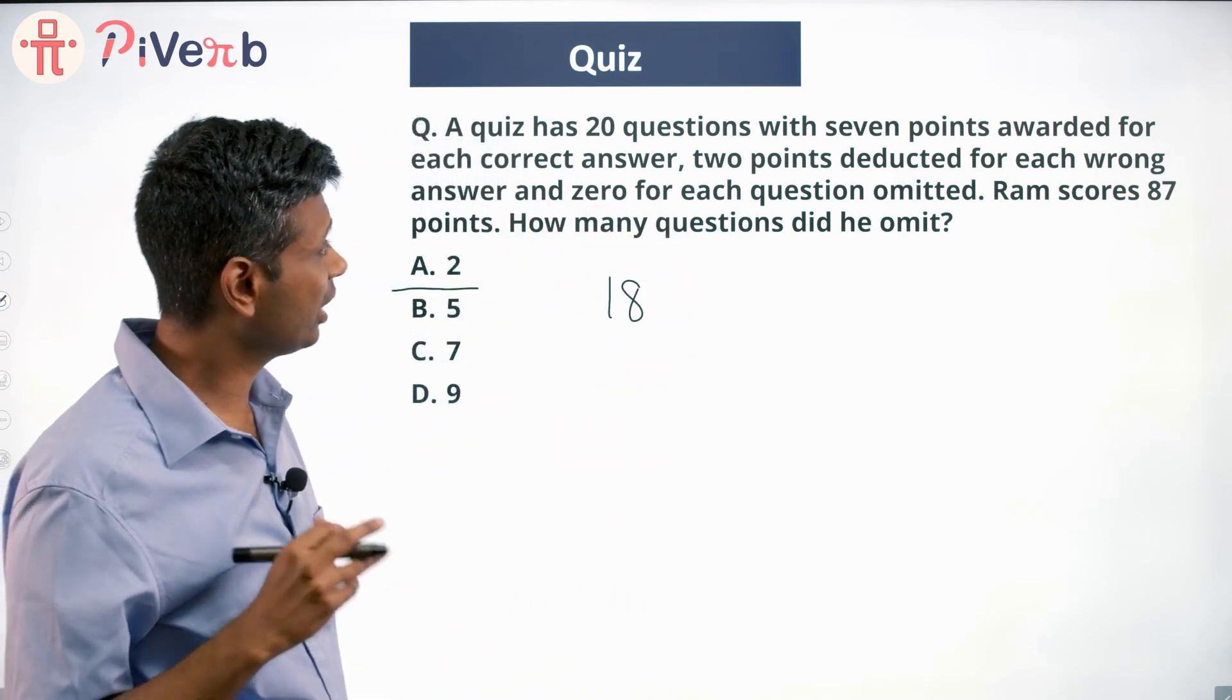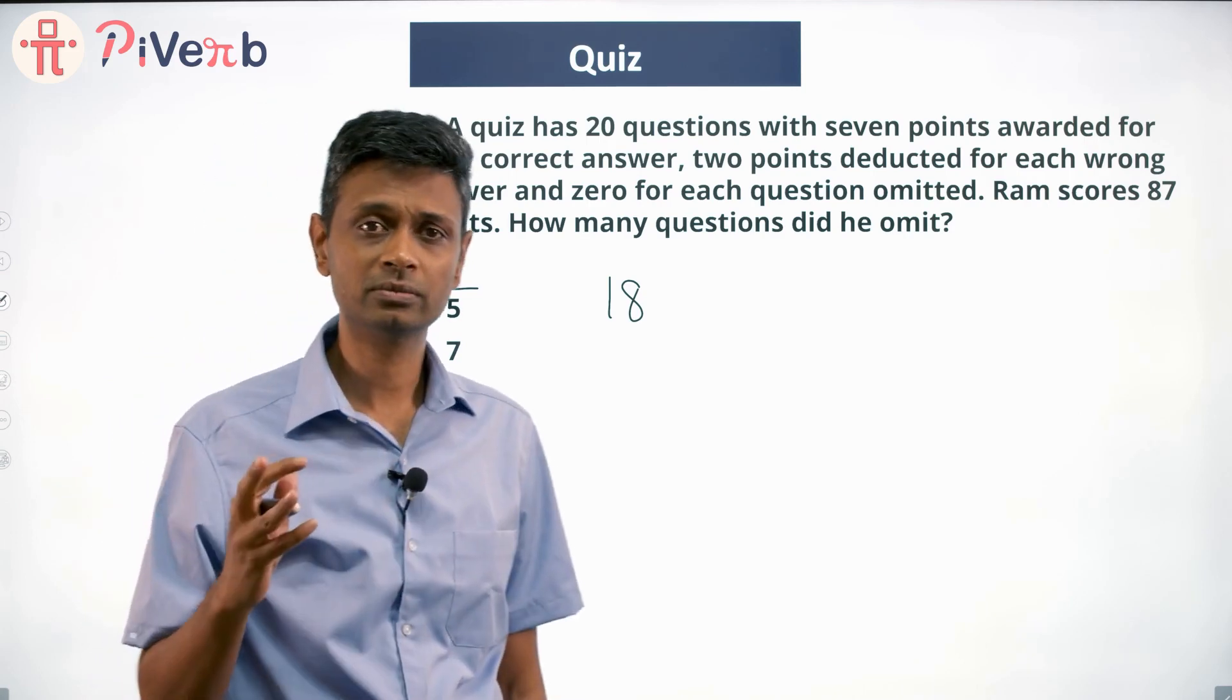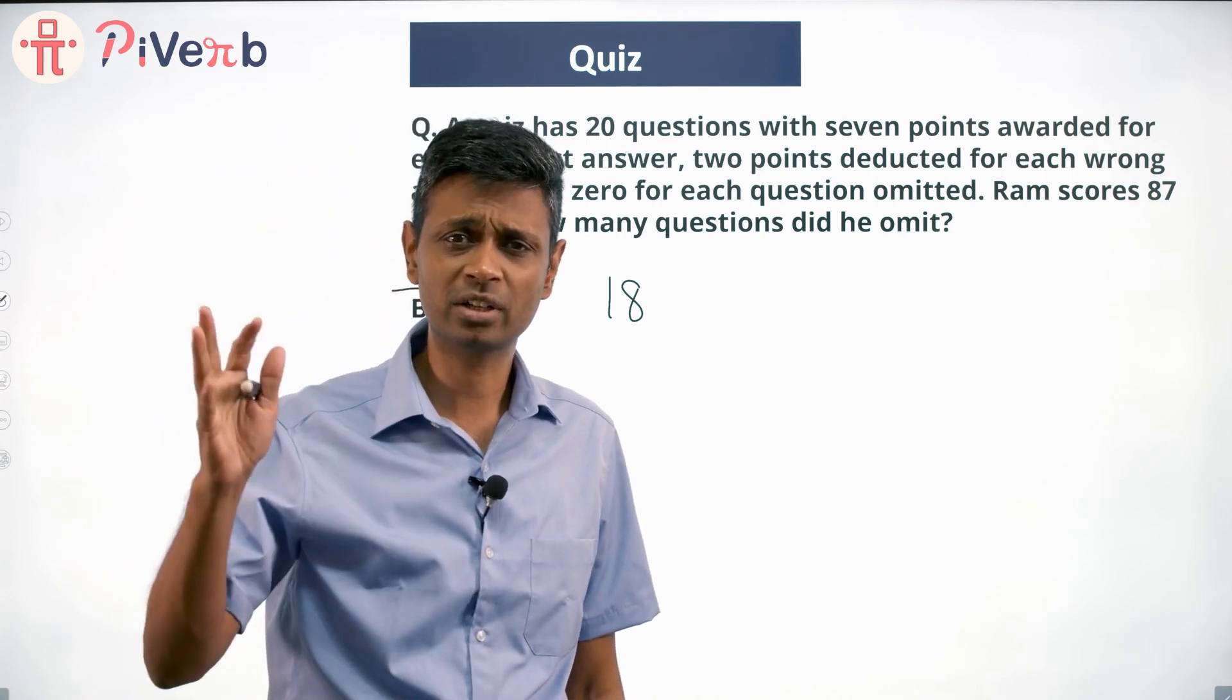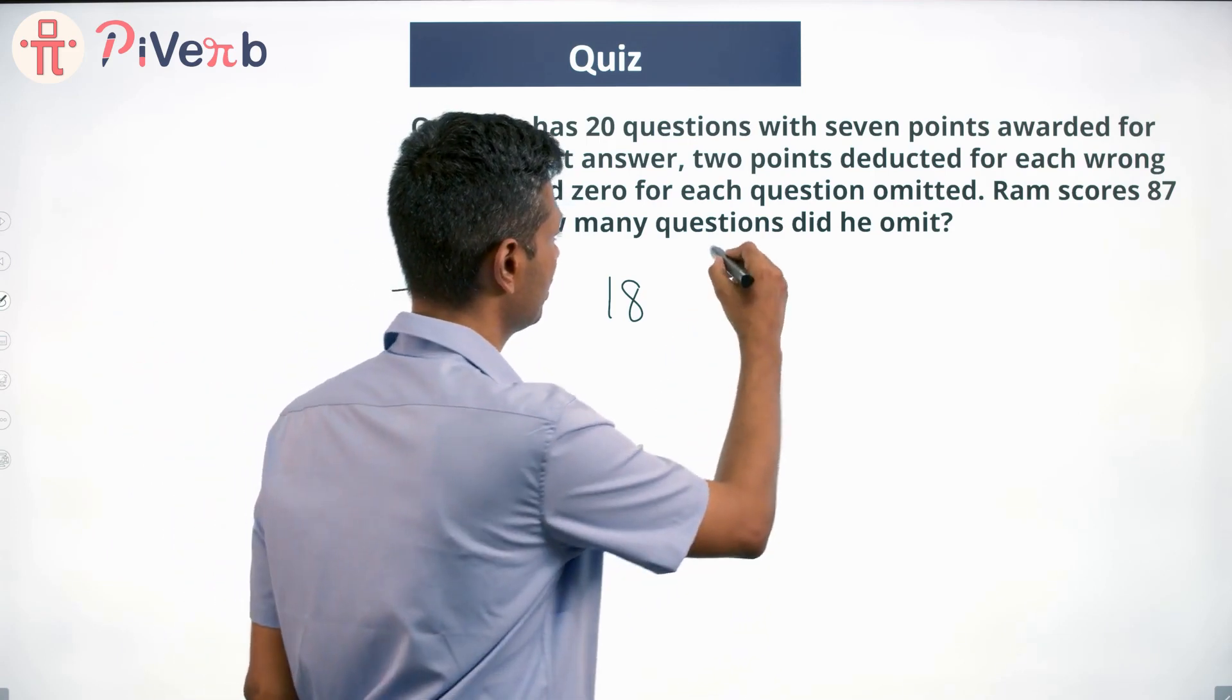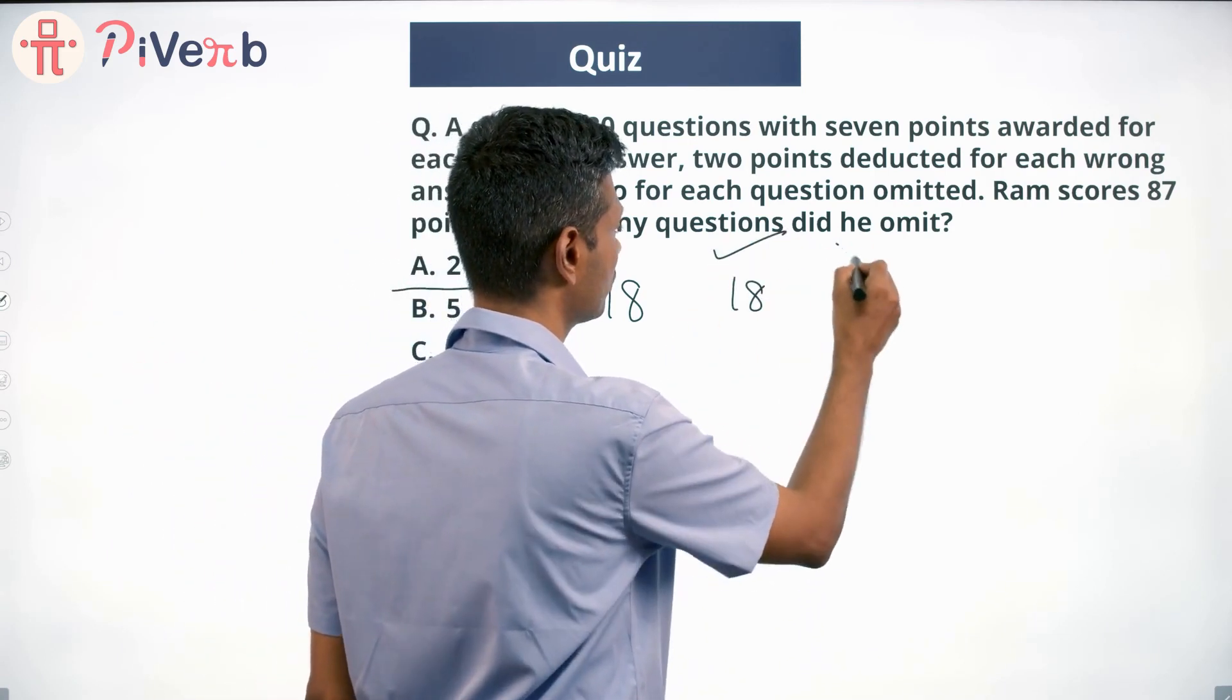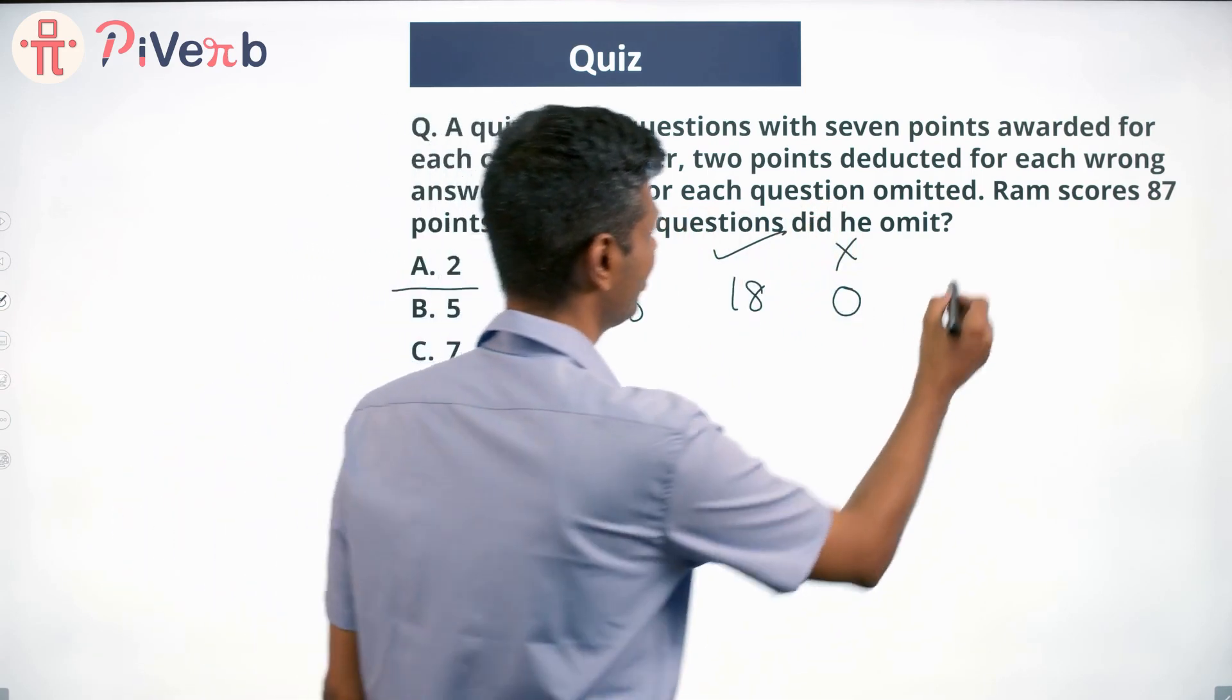18 questions he attempted and got 87 marks. Some he has got right, some he has got wrong. I want to start with the extreme condition. I'm going to assume that everything is right. So out of these 18 questions, he gets everything right and zero wrong. How much will he score?